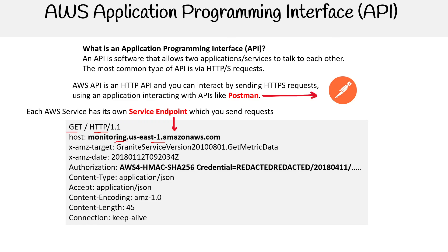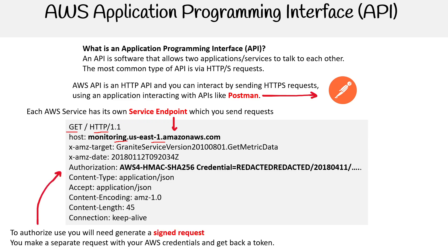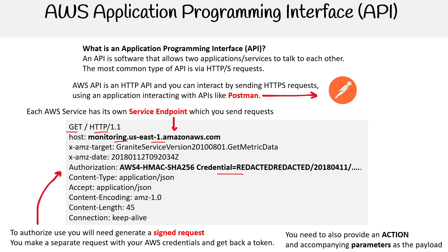You need to authenticate or authorize these requests. What you'll need to do is generate a signed request — you make a request with the AWS credentials, you get back a token, and then you provide that token in the authorization header. You also need to supply an action and parameters, for example, targeting something like list objects in S3, with additional information provided as well.